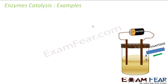Now we'll take some examples. There are so many examples of enzyme catalysis. The first example is the inversion of cane sugar. In the presence of the enzyme invertase, the inversion is fast.